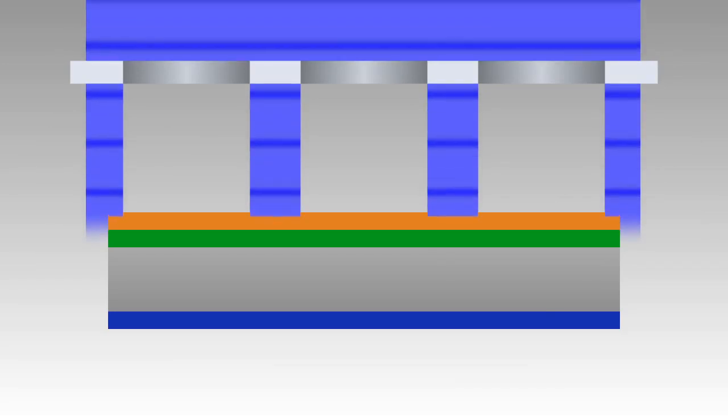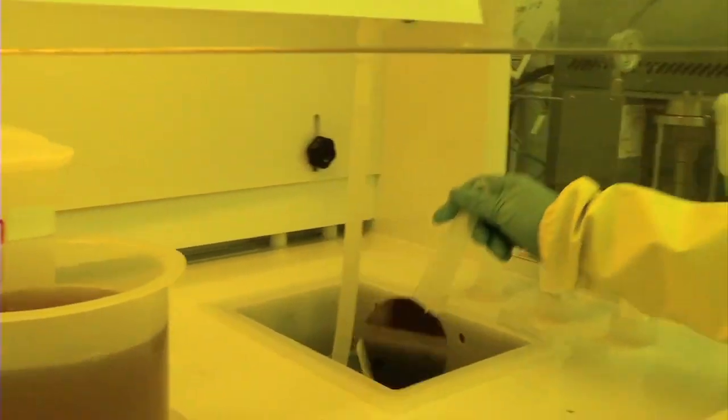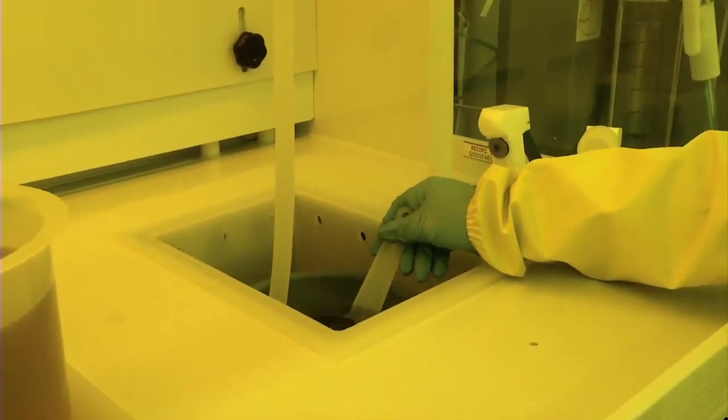A UV light source exposes the photoresist through the mask, transferring the pattern into the photoresist. Finally, the substrate is developed, rinsing away the exposed areas of the photoresist.